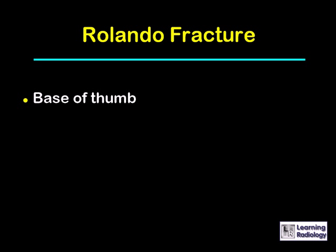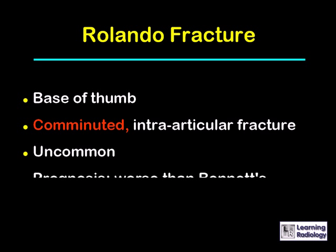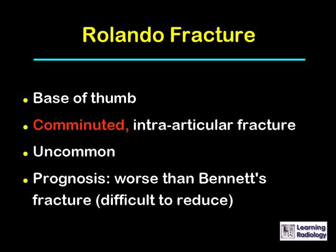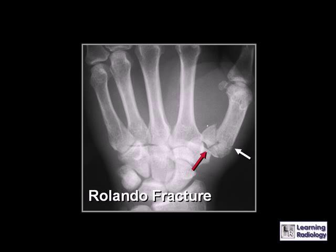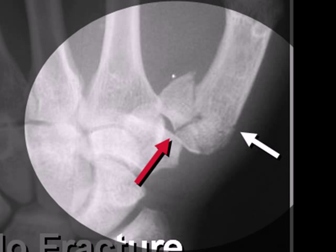A Rolando fracture also involves the base of the thumb. It is a comminuted intra-articular fracture. It is an uncommon fracture, and its prognosis is worse than a Bennett fracture because it is more difficult to reduce. The red arrow points to one fracture fragment and the white arrow points to another fracture line, confirming this comminuted intra-articular fracture at the base of the thumb.